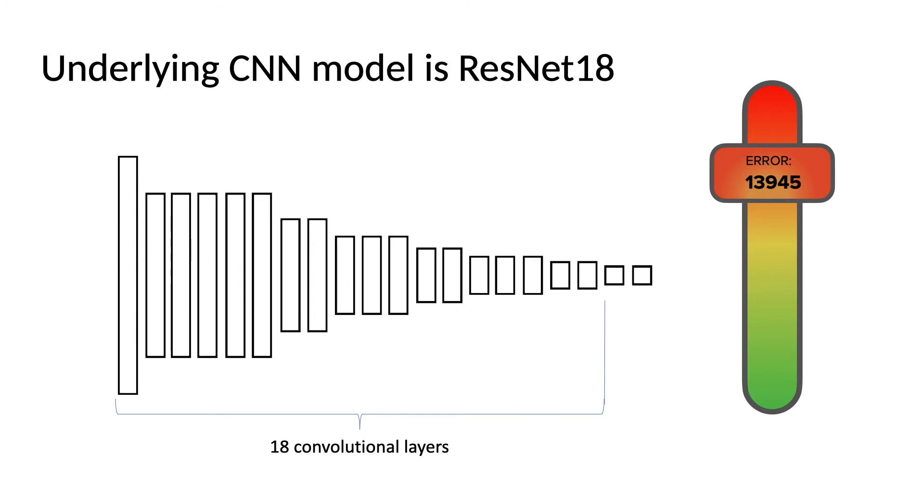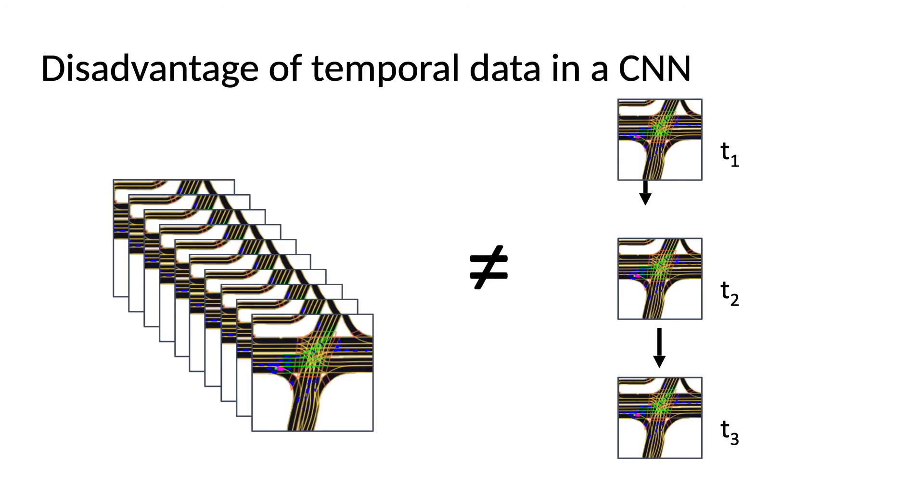The disadvantage of the CNN is that it does not formally know that the input data we are giving it has temporal information. It infers from the back propagation during training that those frames are linked in some way and help it predict the motion of the target vehicle. It would be better to use a model that understands how to use this temporal data in a more efficient way.